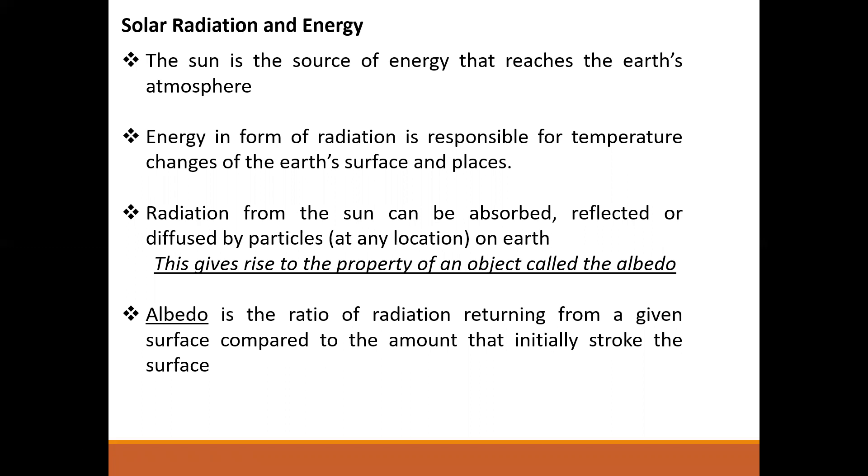Energy in the form of radiation is responsible for temperature changes on the Earth's surfaces and places. The temperature we receive today in Hong Kong, China, Russia, Sweden, USA is a result of energy from the sun. This radiation can be absorbed, reflected, or diffused by particles at any location on Earth.